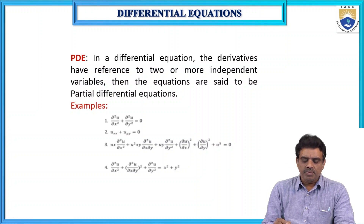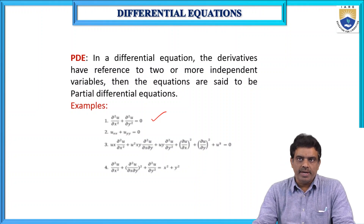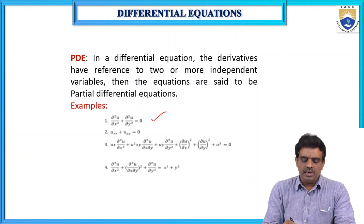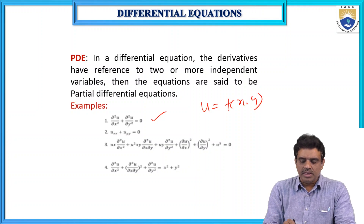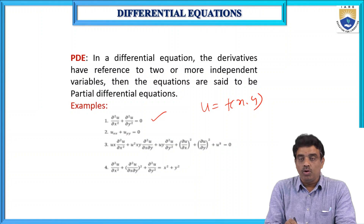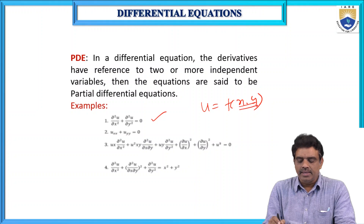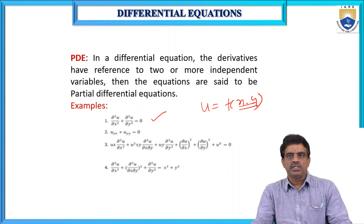For example, ∂²u/∂x² + ∂²u/∂y² = 0. Here u is a function of x and y, and derivatives with respect to both x and y exist in the equation — ∂u/∂x, ∂²u/∂x², and ∂²u/∂y² all exist. So the derivatives have reference to two variables x and y, and this differential equation is called a partial differential equation.